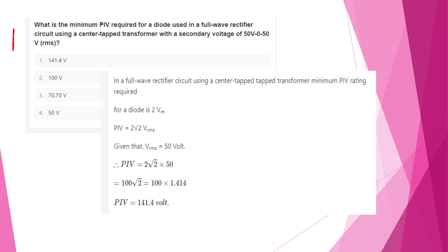What is the minimum peak inverse voltage required for a diode used in a full-wave rectifier circuit using a center-tapped transformer with secondary voltage of 50V RMS? The peak inverse voltage for a center-tap full-wave rectifier is 2Vm. With 50V RMS, Vm = 50√2 V, so PIV = 2 × 50√2 ≈ 141V, which must be higher than 2Vm.